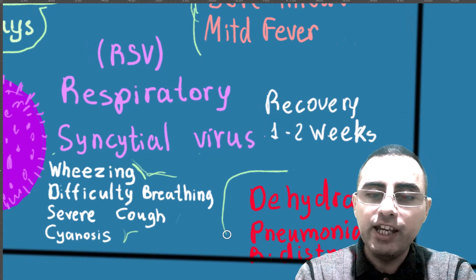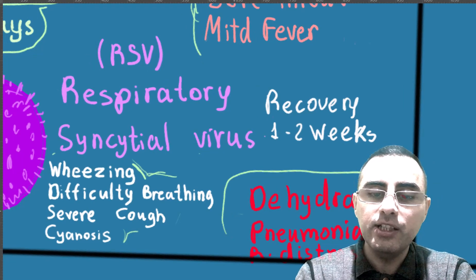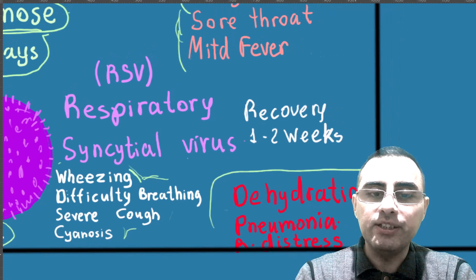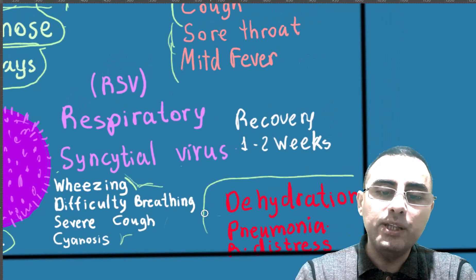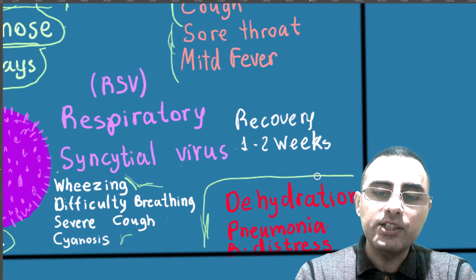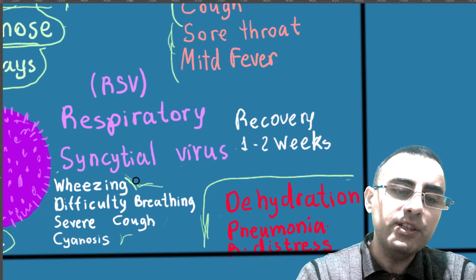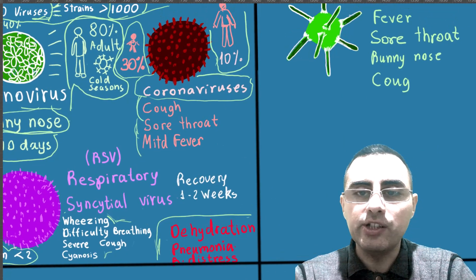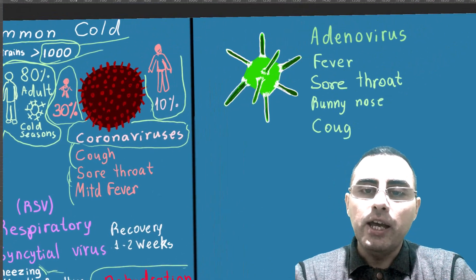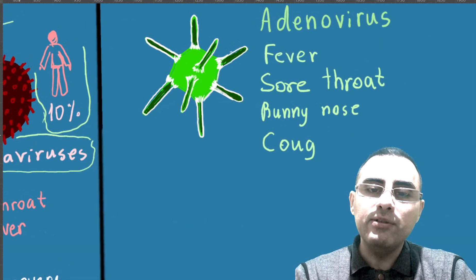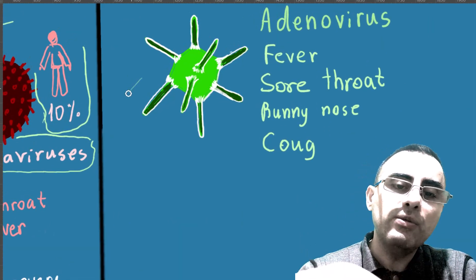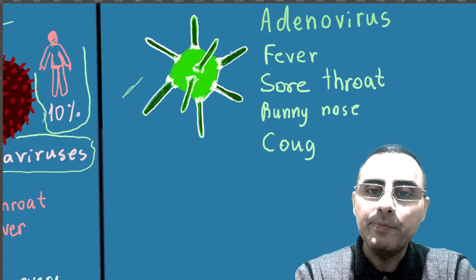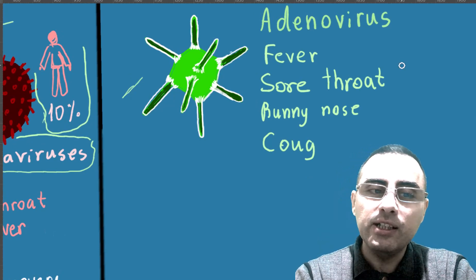If these symptoms — wheezing, difficulty breathing, cyanosis — are present in a case of common cold, there is a high probability it is respiratory syncytial virus. Recovery takes one to two weeks, and there can be complications like dehydration, pneumonia, and respiratory distress. We should be careful in such cases — when kids have wheezing and difficulty breathing, it needs more attention.